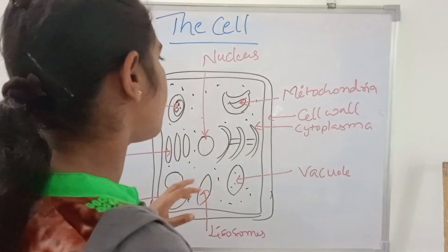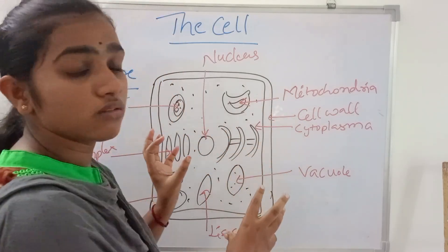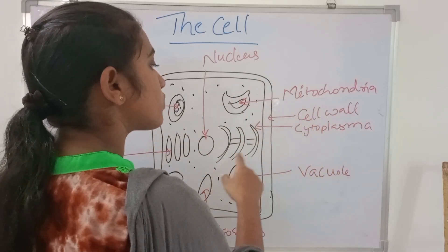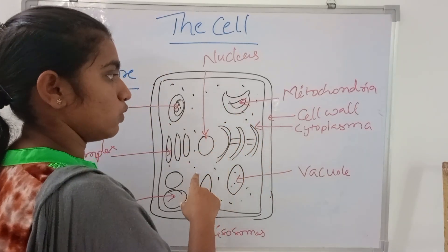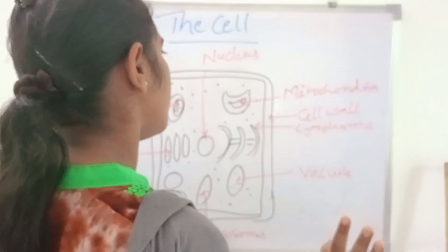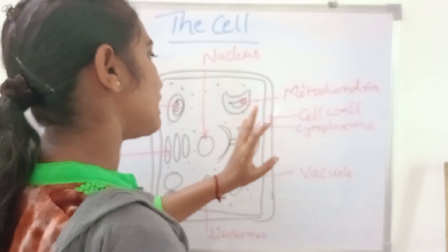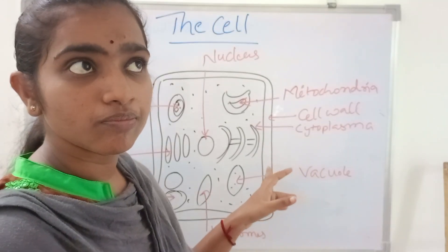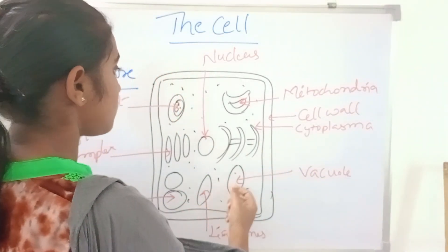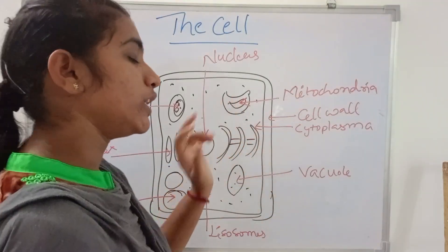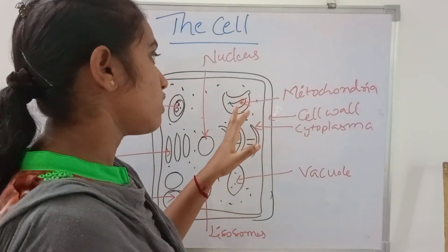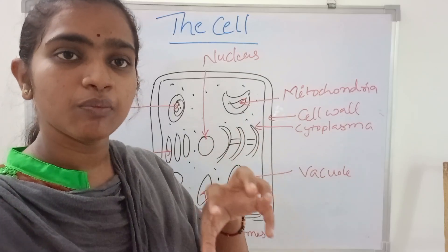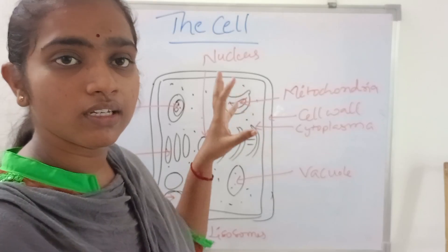The cell wall is the protection of cells. The cytoplasm, when added to the plasma membrane, forms the cell. The plasma membrane is made up of proteins and lipids. Mitochondria are also part of the cell and are called the powerhouse of the cell, producing ATP (adenosine triphosphate).